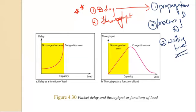When the load becomes greater than the capacity, the waiting time increases, causing a negative effect and congestion. When a packet is delayed and the source does not receive an acknowledgement, it retransmits the packet, which makes the congestion worse. This retransmission cycle further increases the load on the already congested network.